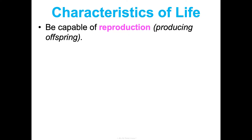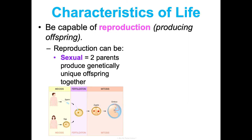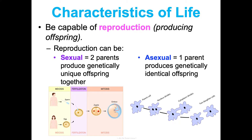You also have to be capable of reproduction, which means producing offspring. That reproduction can be sexual, which takes two parents and together they produce genetically unique offspring. Or it could be an asexual process where one parent produces genetically identical offspring, such as how bacteria do binary fission. The process doesn't matter as long as you're able to create offspring.